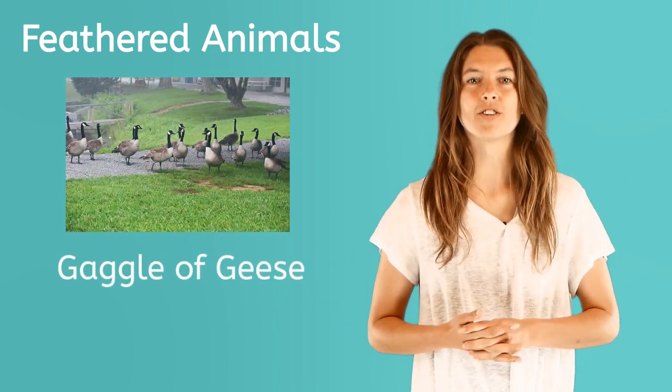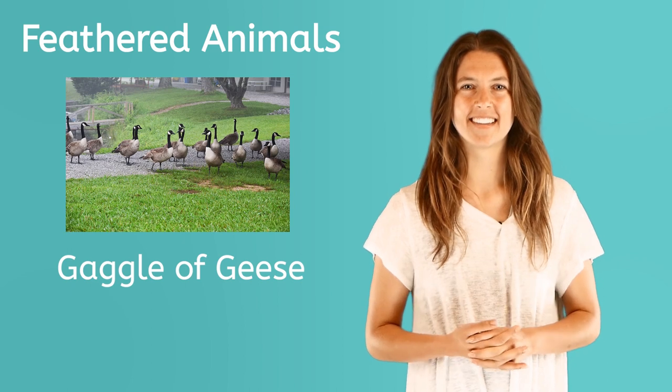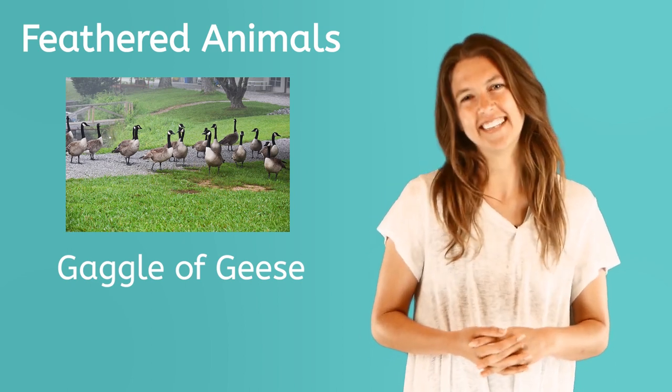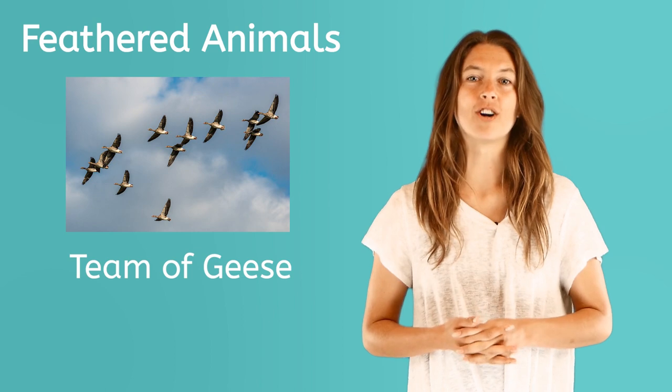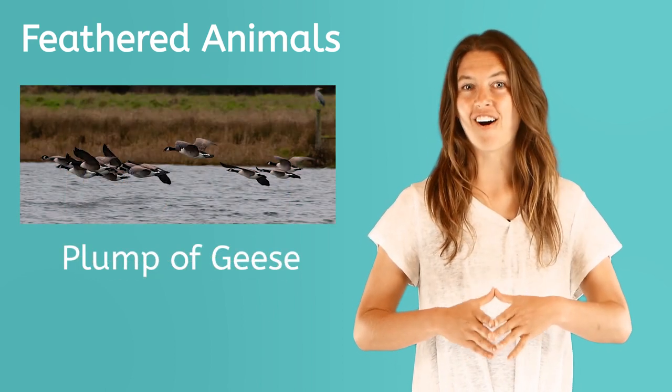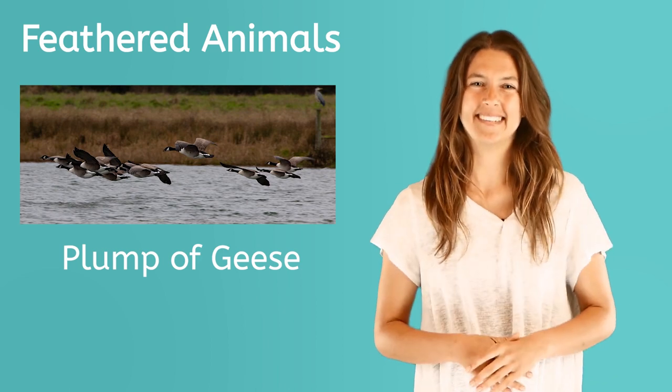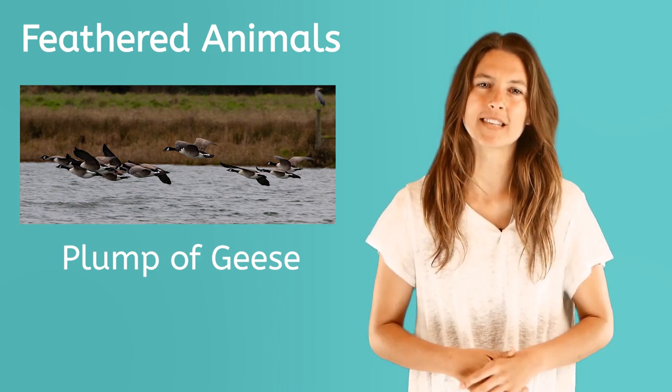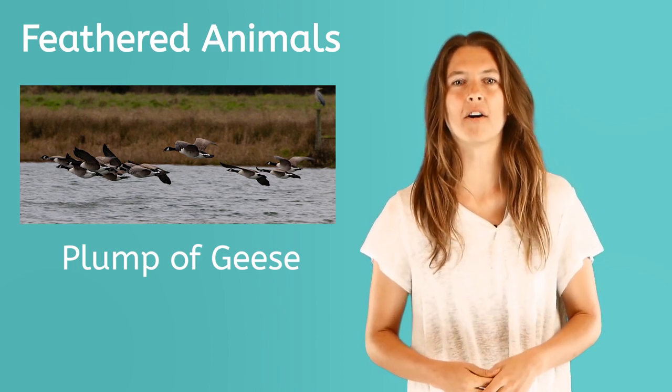A group of geese on the ground is called a gaggle. That's a fun word, gaggle. When they are flying, the group is called a team. And when they fly close together, they are called a plump. But most people say a flock of geese when talking about a group of geese.